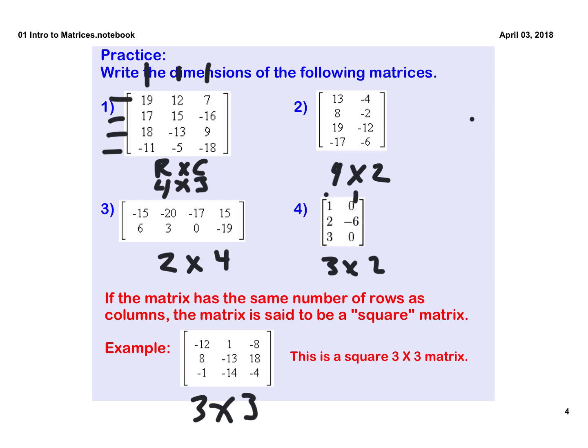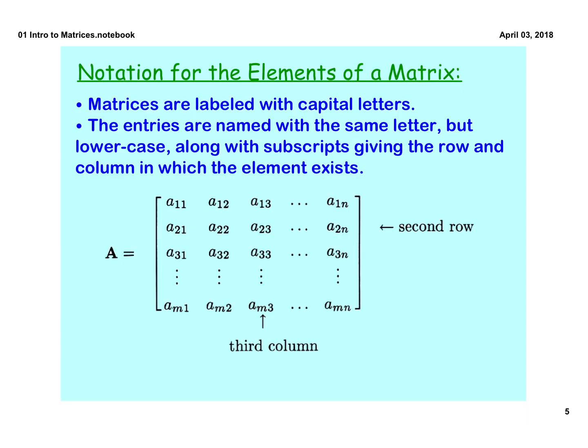You could call these little elements these little guys right here, and they've got it labeled there with an a_11. That's not an 11, it's a one one. That means it's row one, column one.